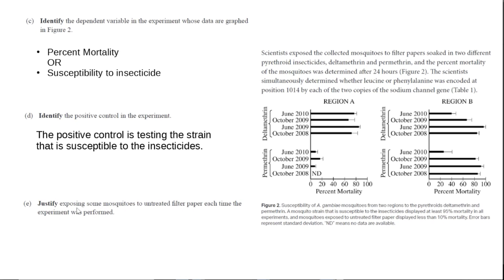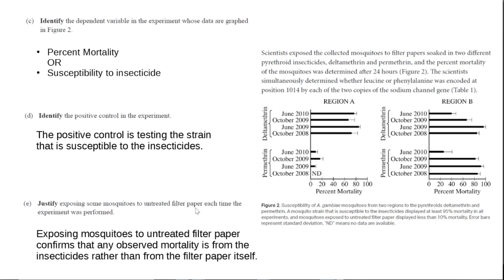The last part here is to justify exposing some mosquitoes to untreated filter paper each time the experiment was performed. This is our negative control, where we're not treating anything. The purpose of the untreated filter paper is to rule out the filter paper itself — we want to make sure it's the insecticides that are killing the mosquitoes and not the filter paper. So the untreated filter paper confirms that any observed mortality is from the insecticides and not from the filter paper or any other variable present.